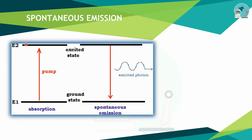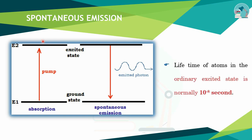Here is an energy level and here is another energy level. In this energy level there are atoms. The ordinary excited state lifetime is 10 to the power minus 8 seconds. So if you observe an atom here, you can see that automatically the energy level drops down. What do you think? Spontaneous emission — no external agents required.